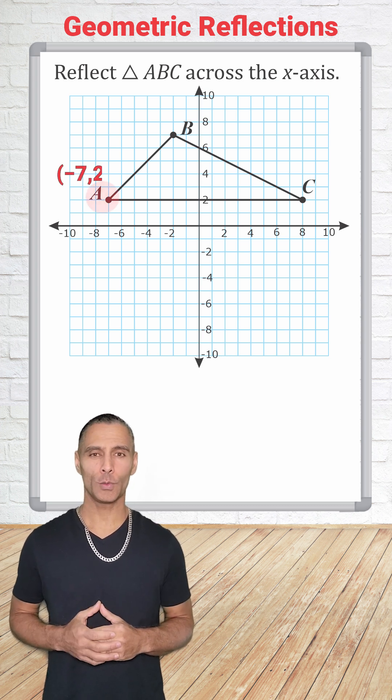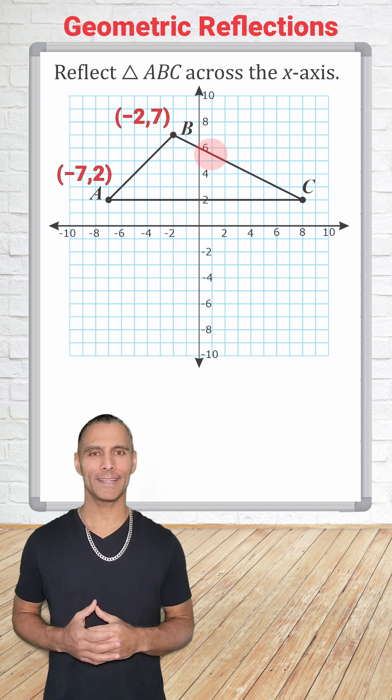Point A is at negative 7, 2, point B is at negative 2, 7, and point C is at 8, 2.